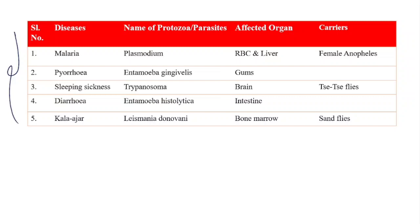Now we will study some diseases caused because of protozoa and parasites. We will also learn about the carriers through which the disease spreads from one person to another, and the affected organs. First: Malaria is caused because of a protozoa named Plasmodium and it attacks the red blood cells in our liver.